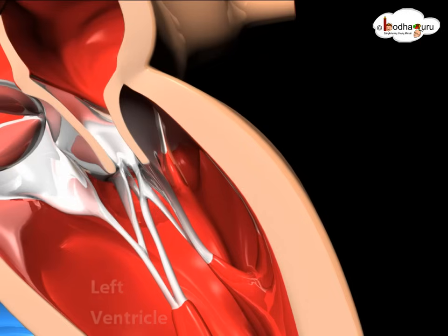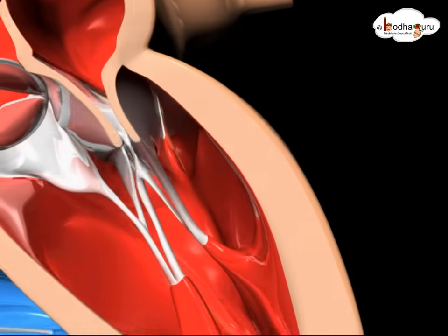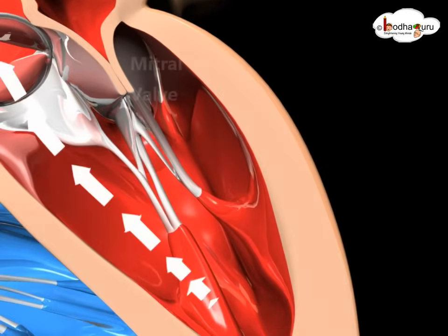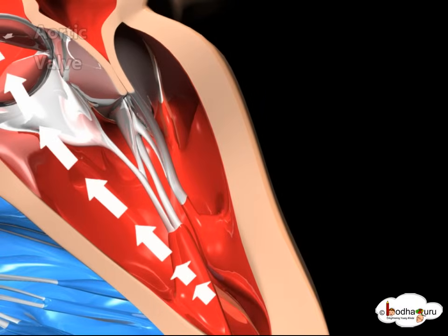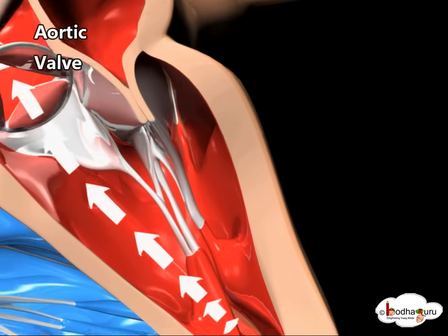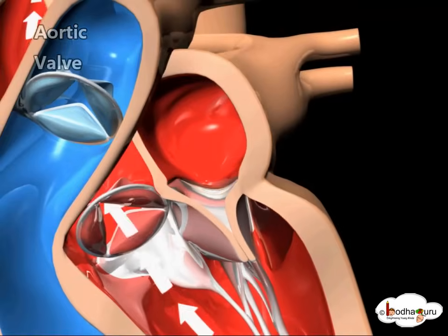When the ventricles are full, the mitral valve shuts. Blood leaves the left ventricle through the aortic valve into the aorta and to the body.